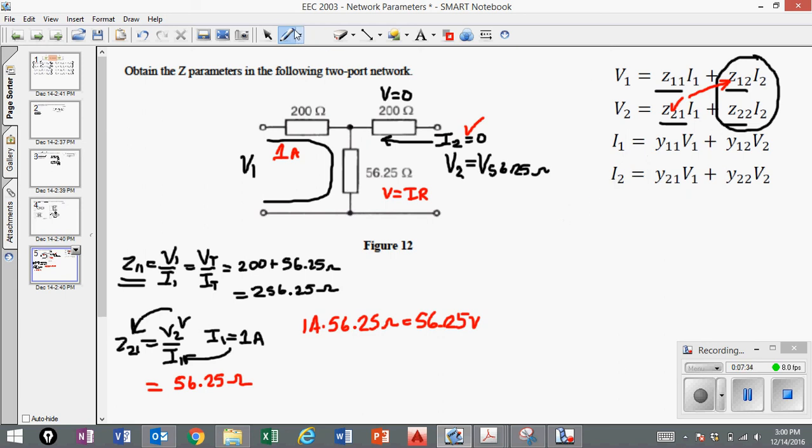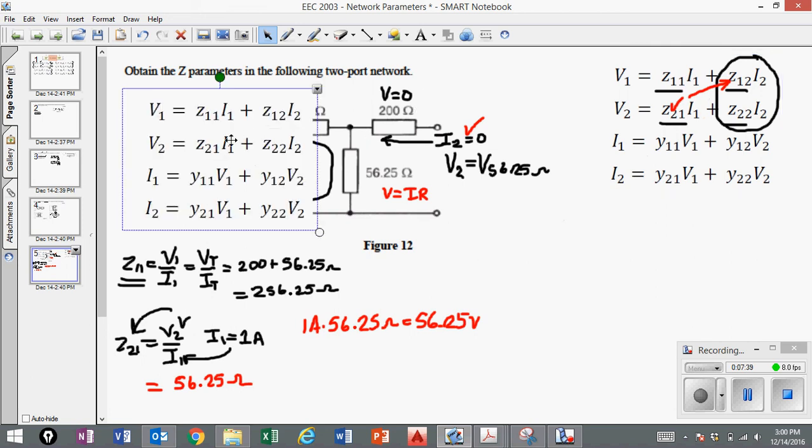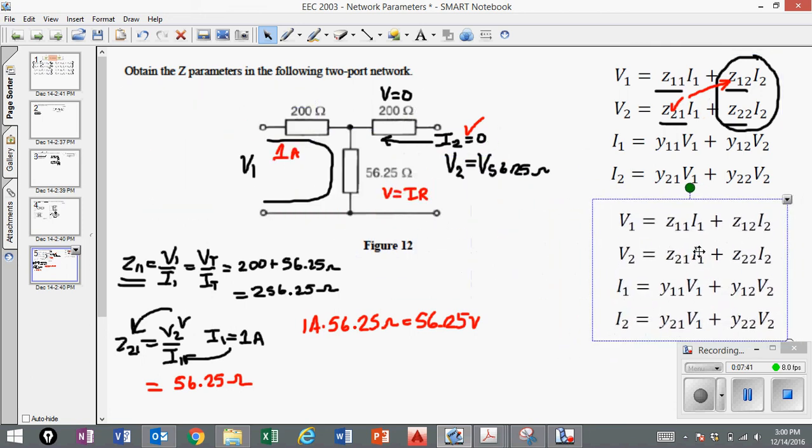Now we've completed this part. Let us work on the second part where we assign this equal to zero. So next time we're going to make I1 equal to zero. I'll do that in my next video.